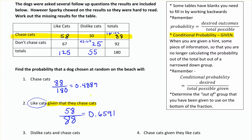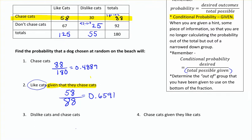You need to think about what you're looking for — what we want, which is that they like cats — out of the possible given, so the narrowed-down group. Instead of out of 180, we're out of only 88. Now, what's the probability that they dislike cats and they chase cats? Dislike cats and chase cats is 30. There's no hint being given here, so it's still out of the total 180. That gives 0.1667 — no conditional probability there.